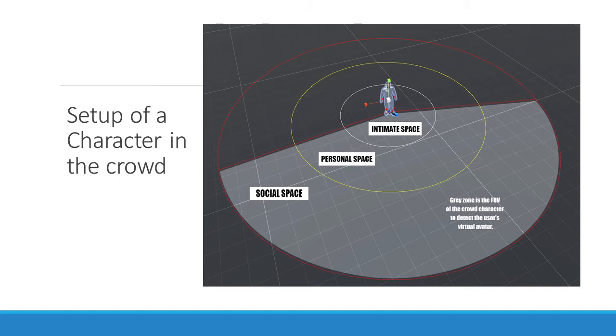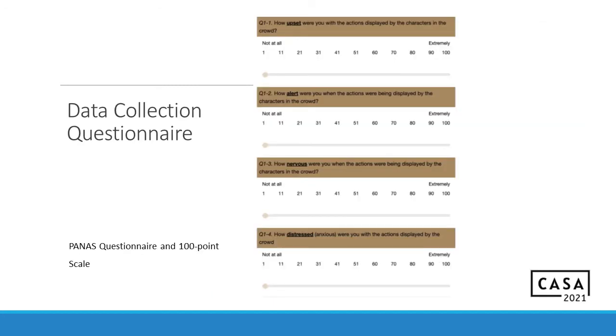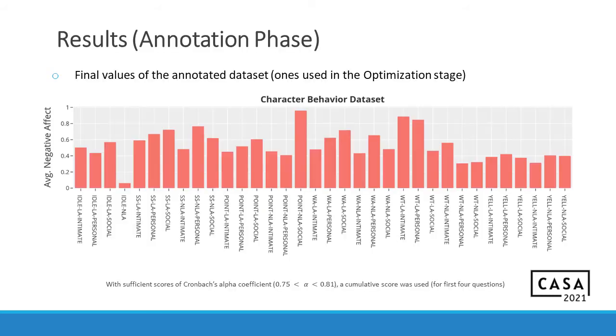This is how an individual character look like. Each character had certain scripts, which determined their three different spaces, which we broke up their distances accordingly. And inside each of these spaces is where the appropriate behavior would be executed or triggered. And the gray zone is basically the FOV, so that the person feels believable. And when we enter their vision field, the behavior gets triggered. We don't want it to be executed when the player just moves away from them. This is an example of the data collection questionnaire that we used. Basically, you can see we found four terms from the PANAS questionnaire. And then we modified it into a 100-point scale. And we presented it to the participants after each of the scenarios that got run.